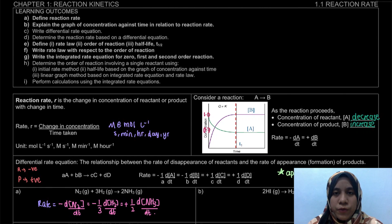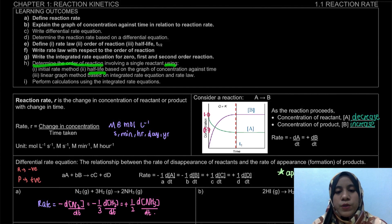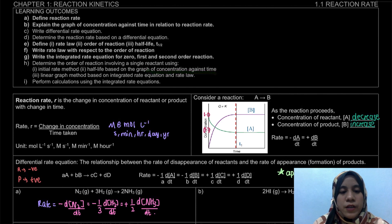Assalamualaikum and hello everyone. Welcome to a new video for 1.1 reaction rate. In this video, what we're going to learn is how to determine the order of the reaction using half-life based on the graph of concentration against time, as well as the linear graph method.